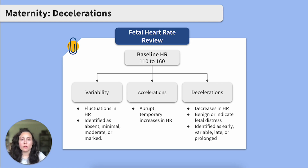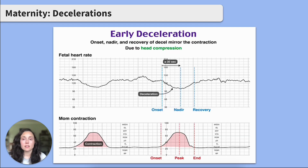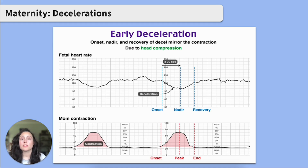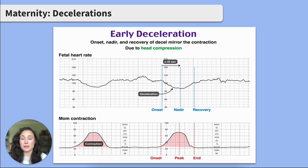We'll pair a fetal heart rate strip with each example so you can follow along. Let's begin with early decelerations. These are characterized by a gradual decrease in fetal heart rate that returns to baseline, usually at a similar rate to when the contraction ends. These decelerations will mirror the client's contractions and are caused by fetal head compression during contractions. These are generally harmless and just require continued monitoring.